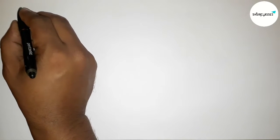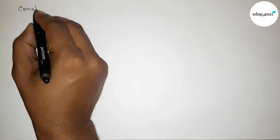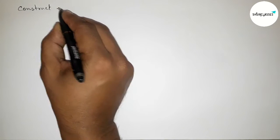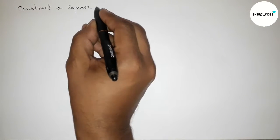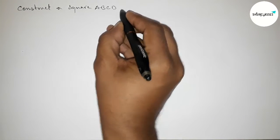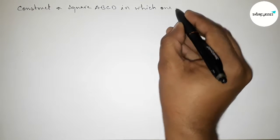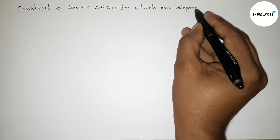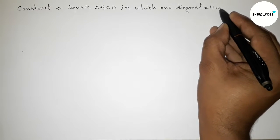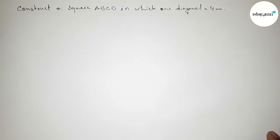Hi everyone, welcome to Sideshare classes. Today in this video we have to construct a square ABCD in which one diagonal equals to four centimeter. So please watch the video till the end. Let's start the video.